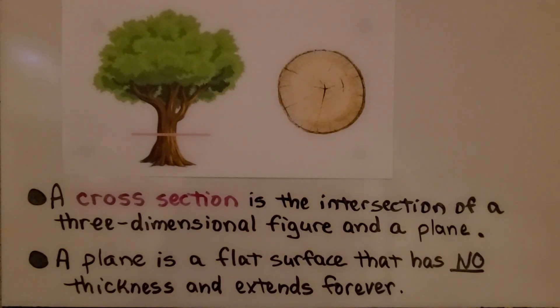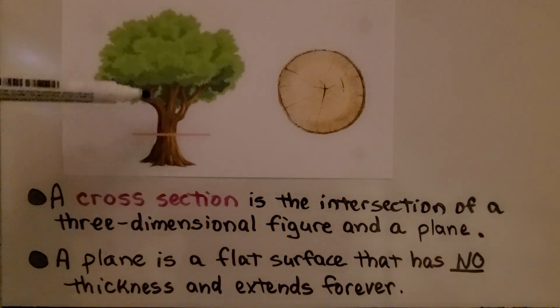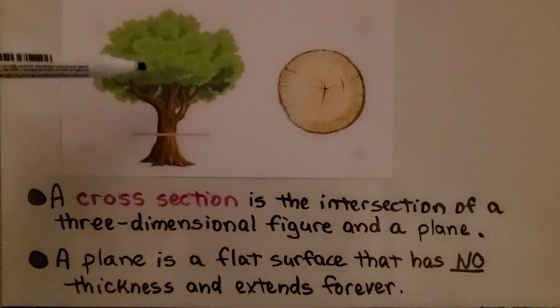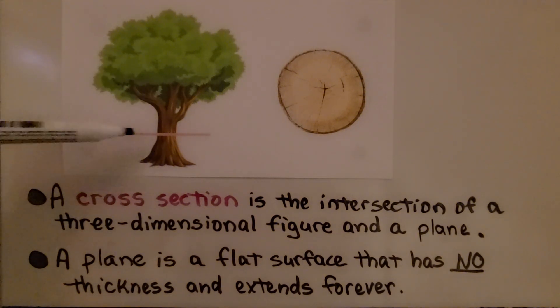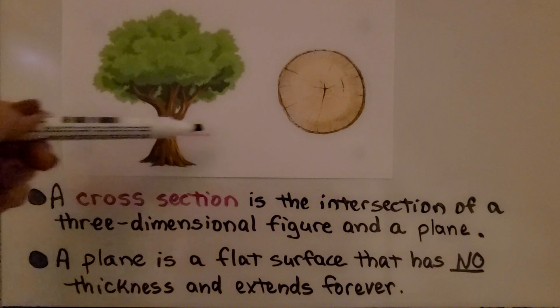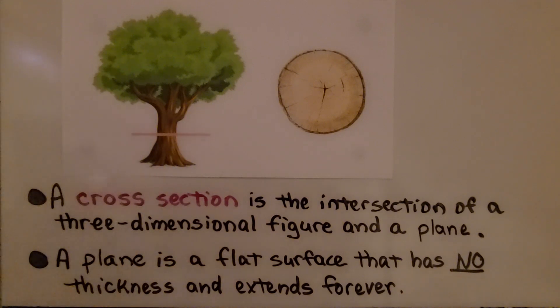A cross-section is the intersection of a three-dimensional figure and a plane. A plane is a flat surface that has no thickness and extends forever.